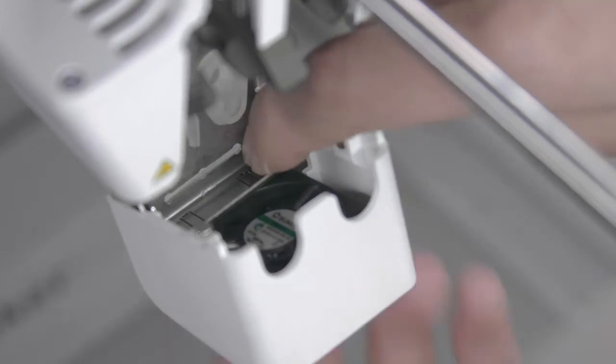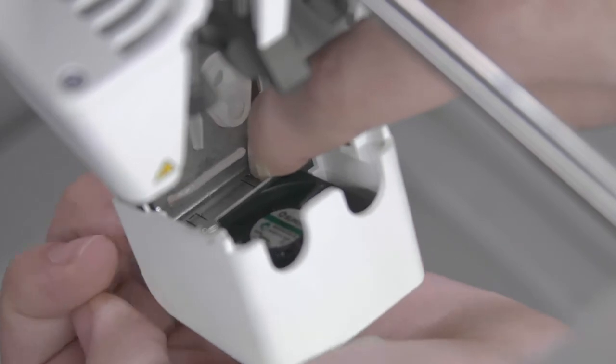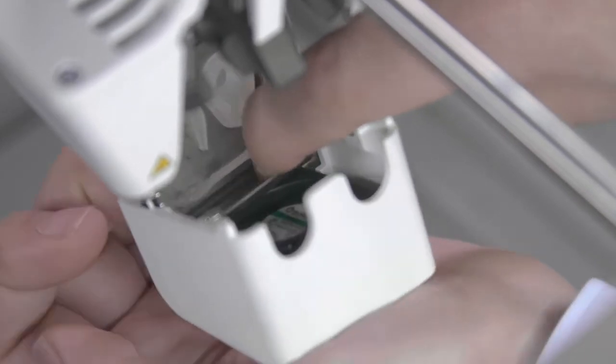Finally, push the front tab through the slot in the printhead fan bracket while applying pressure to the metal plate from the inside of the printer. Make sure the seal is pushed through the plate to lock the cover in place.